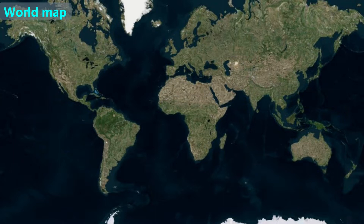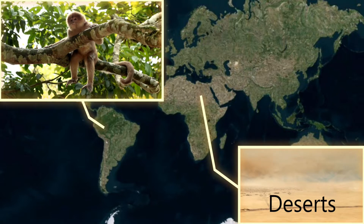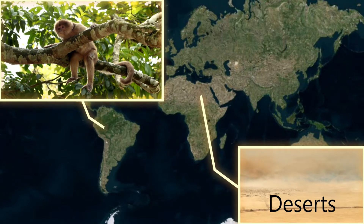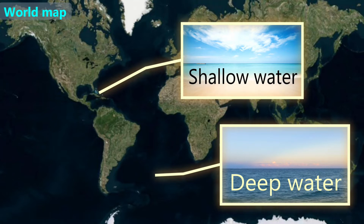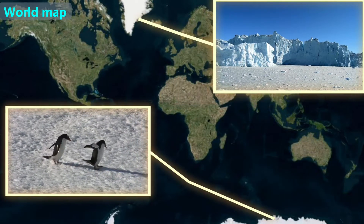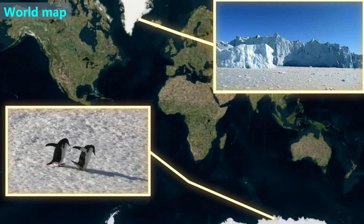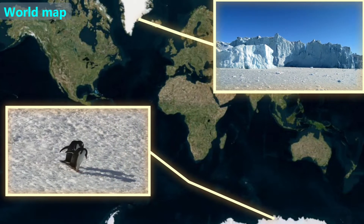We'll start by introducing world maps. A world map shows us where major land masses and bodies of water are in the world. Many of these are made from actual photos taken from planes, so we'll have colors of what the land looks like from high up in the air. Green usually means plants like trees or grass. Brown can mean sand, like in a desert. Light blue means shallow water, and dark blue is deep water. The water may be rivers, lakes, or oceans. For a place to be white on a map, that generally means it has ice all year, like the Arctic, Antarctica, or places near those poles.